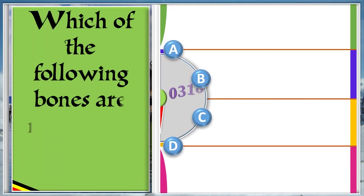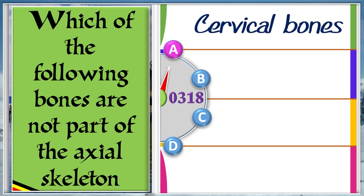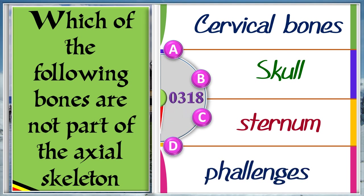Which of the following bones are not part of the axial skeleton? A: Cervical bones. B: Skull. C: Sternum. D: Phalanges. And the answer is D, phalanges.